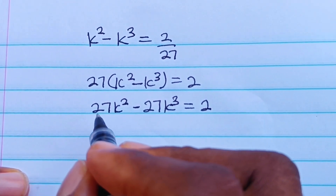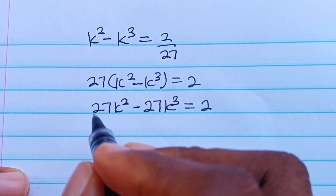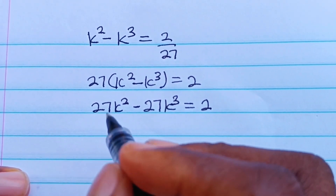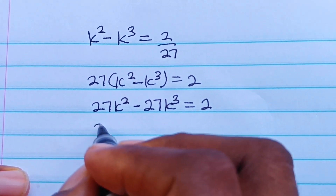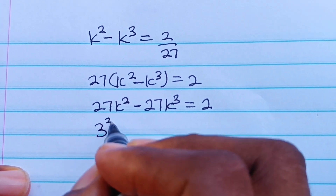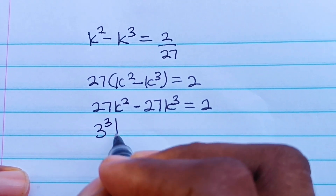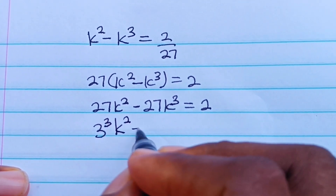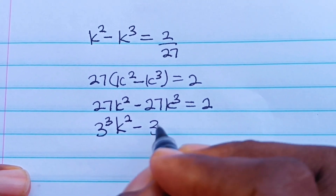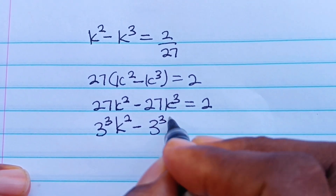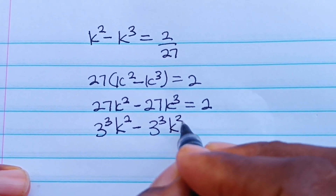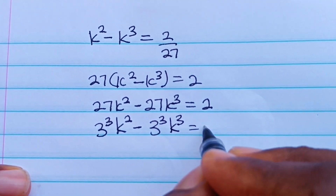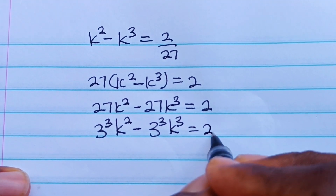Now recall that 27 is the same thing as 3 to the power of 3. So we can write this as 3³ · k² minus 3³ · k³ is equal to 2.